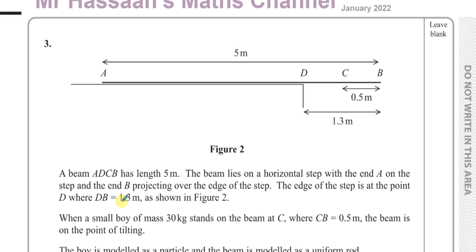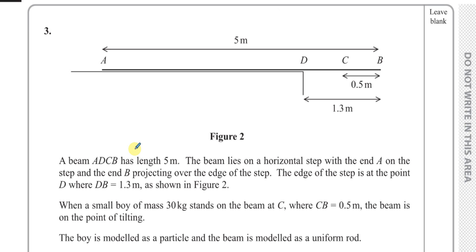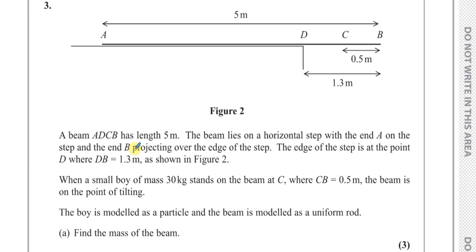When a small boy of mass 30 kilograms stands on the beam at C, where CB is 0.5 metres, the beam is on the point of tilting. The boy is modelled as a particle and the beam is modelled as a uniform rod. Find the mass of the beam.